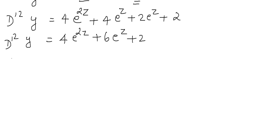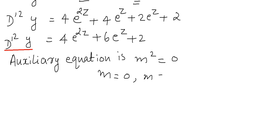Now we need to find the solution of y, which is always the sum of the complementary function (CF) plus the particular integral (PI). To find the complementary function, we solve the auxiliary equation from D'²y = 0. For the auxiliary equation, we substitute m in place of D', giving m² = 0, which means m = 0 and m = 0. The roots are real and identical.